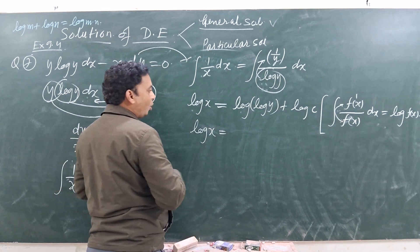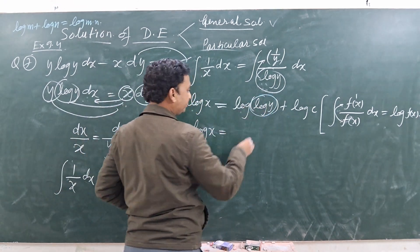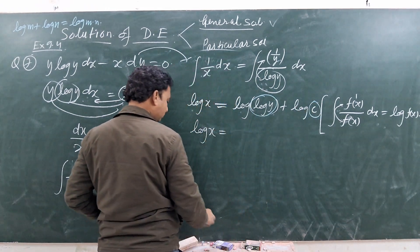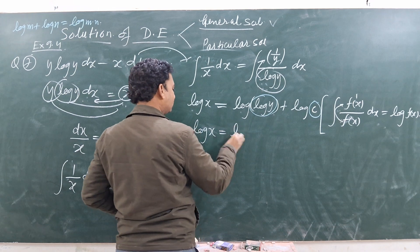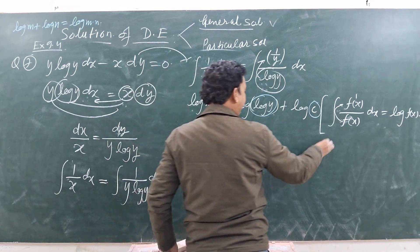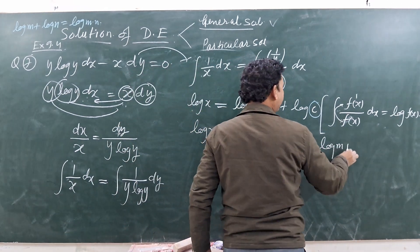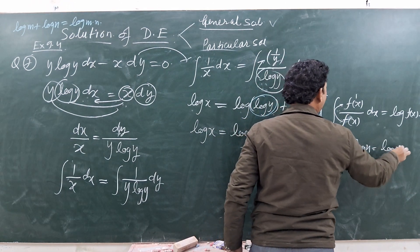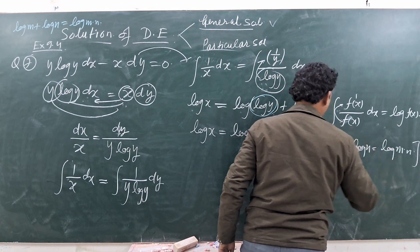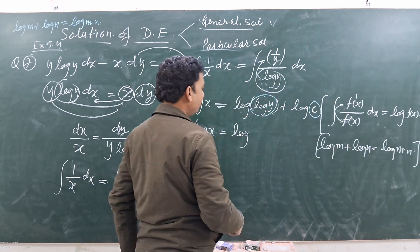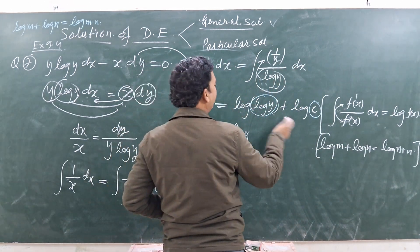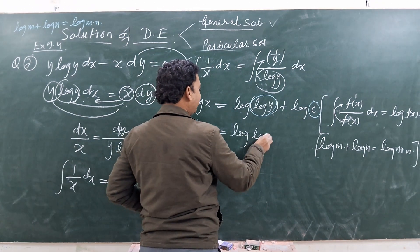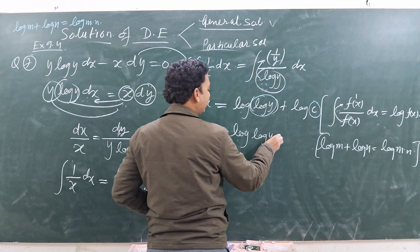Applying the log rule: log M + log N = log(M × N). So log x + log C = log(x · C) = log(log y). This gives us log x + log C = log(log y), combining using the product rule of logarithms.